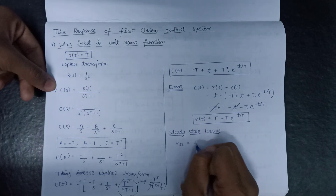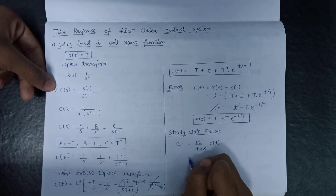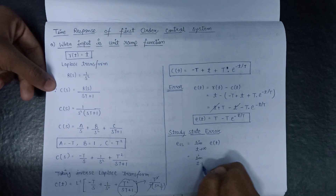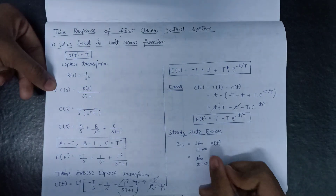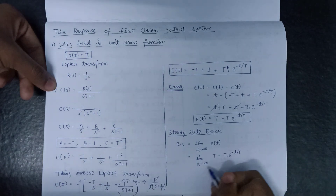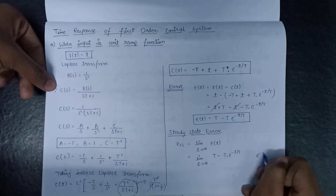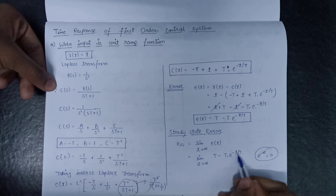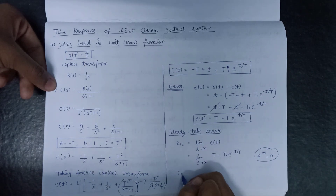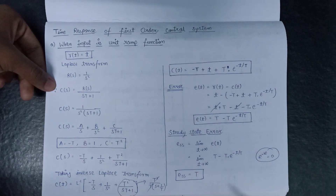Moving on to the steady-state error: e_ss equals the limit as t tends to infinity of e(t) = T − T·e^(−t/T). As t tends to infinity, e^(−∞) equals zero, so that term vanishes. Therefore, the steady-state error e_ss equals T. Thank you.